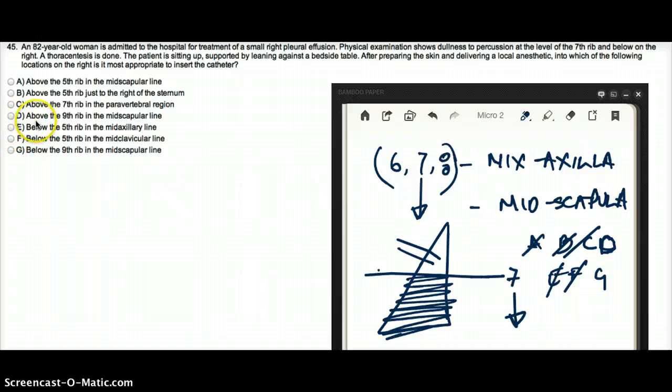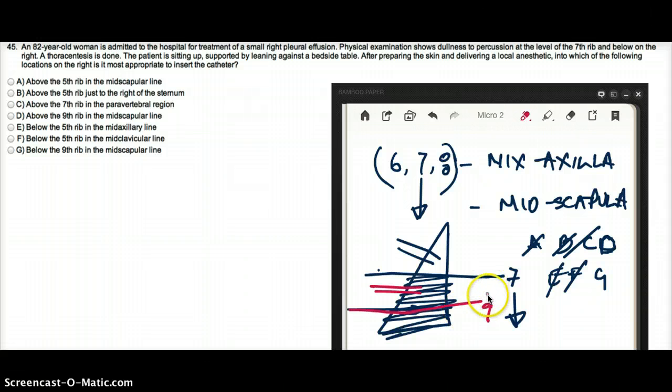Now what about choice D? Above the 9th rib in the mid-scapula? Sure, that sounds like a good area to start. It's at the level. It's above the 9th rib. So, let's say this is 9, you know, above the 9th rib, it would be a good position to do thoracentesis. So D is a possible answer.